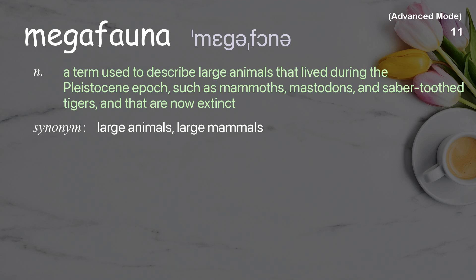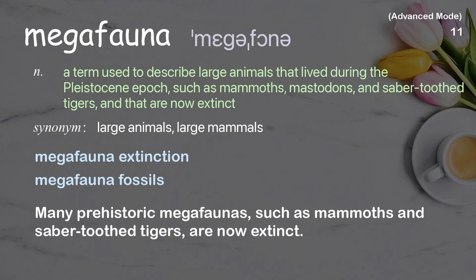Megafauna: A term used to describe large animals that lived during the Pleistocene epoch, such as mammoths, mastodons, and saber-toothed tigers, and that are now extinct. Examples: megafauna extinction, megafauna fossils. Many prehistoric megafaunas, such as mammoths and saber-toothed tigers, are now extinct.